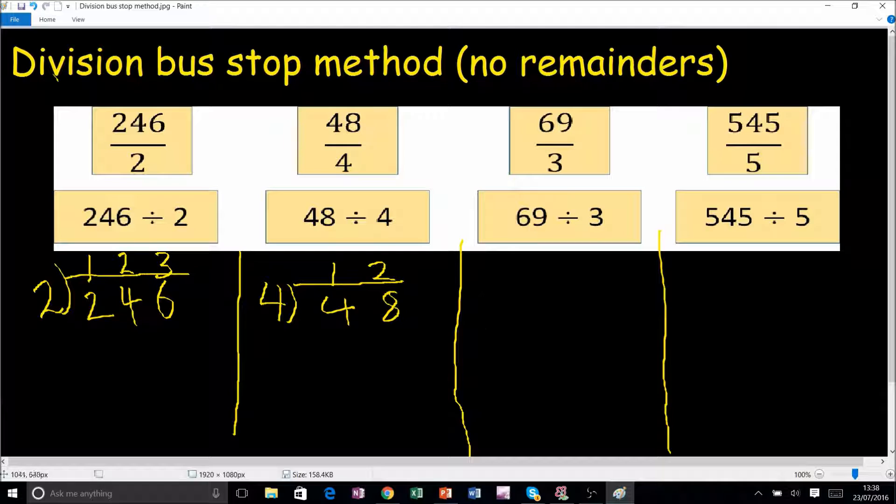Now our next one, 69 divided by 3. So we've got 3 and 69. How many 3's go into 6? 2. How many 3's go into 9? 3, remainder nothing. Now let's move on to the last one.